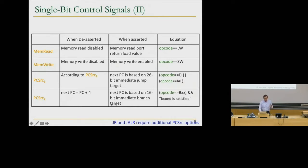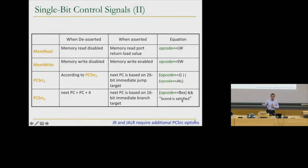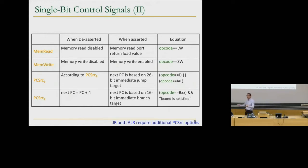The really interesting control signal is PC source two — whether the PC gets program counter plus four, or the branch target address coming from the branch target calculation logic. If the opcode is a conditional branch (BEQ, BNE, BGT, for example) and the branch condition is satisfied — meaning the branch is taken, which comes from the ALU output — then this signal is set. This signal is dependent not just on the opcode, but also on what's happening in the data path at this point.